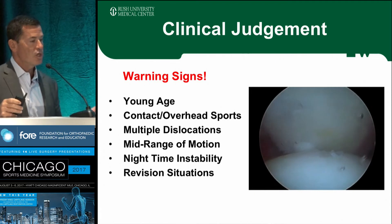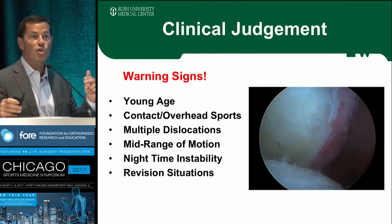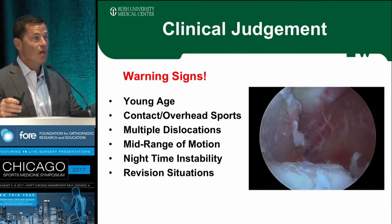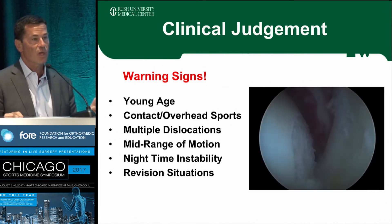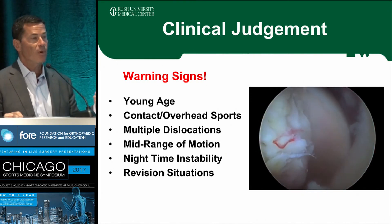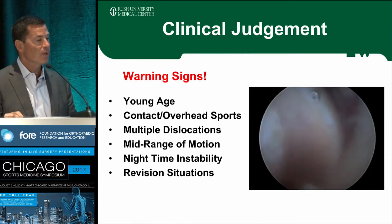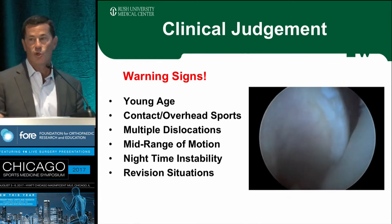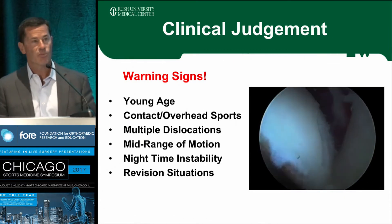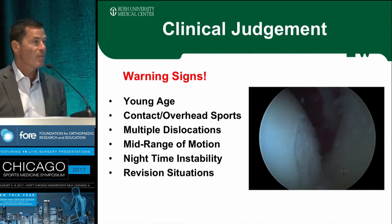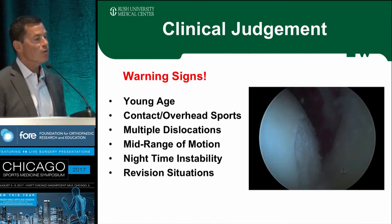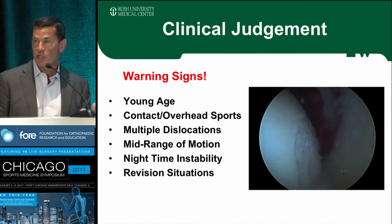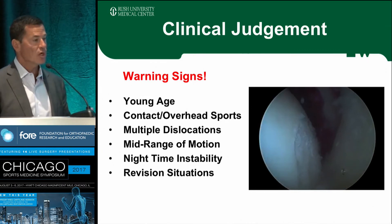These are the warning signs: young age, the contact overhead athlete — that's the one who puts themselves back at risk. You could have all the same variables in a patient who's not an overhead athlete, who fell down the stairs and dislocated with a little bit of bone loss, and you might succeed with a soft tissue operation. But take all those same independent variables and put them in a collision sport risk category — that's one where you'd probably reduce your threshold to do a bony procedure. Chronicity, multiple dislocations, mid-range instability, coming out at night, or a revision situation — those are cases where you start thinking about bone loss.